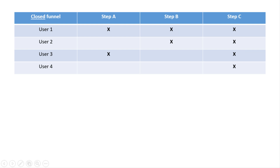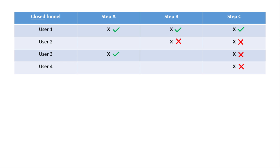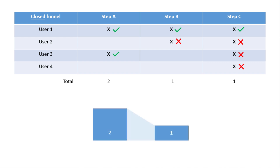Now let's look at the same situation with a closed funnel. For user one, all three steps are counted. For user two, steps B and C are not counted because the required first step was skipped. For user three, step A is counted but step C is not counted because step B was skipped. For user four, nothing is counted because steps A and B were skipped. So the total numbers in the closed funnel are: two users in step one, one user in step two, and one user in step three. Visually, two users in step one, a drop-off to one user in step two, and that same user moves to step three.